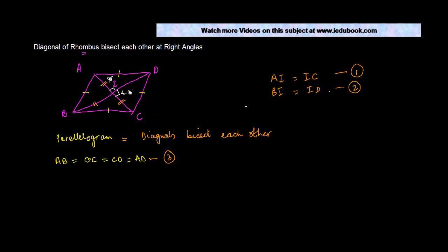Or, in other words, you have to prove that angle AID is equal to angle DIC is equal to 90 degree.